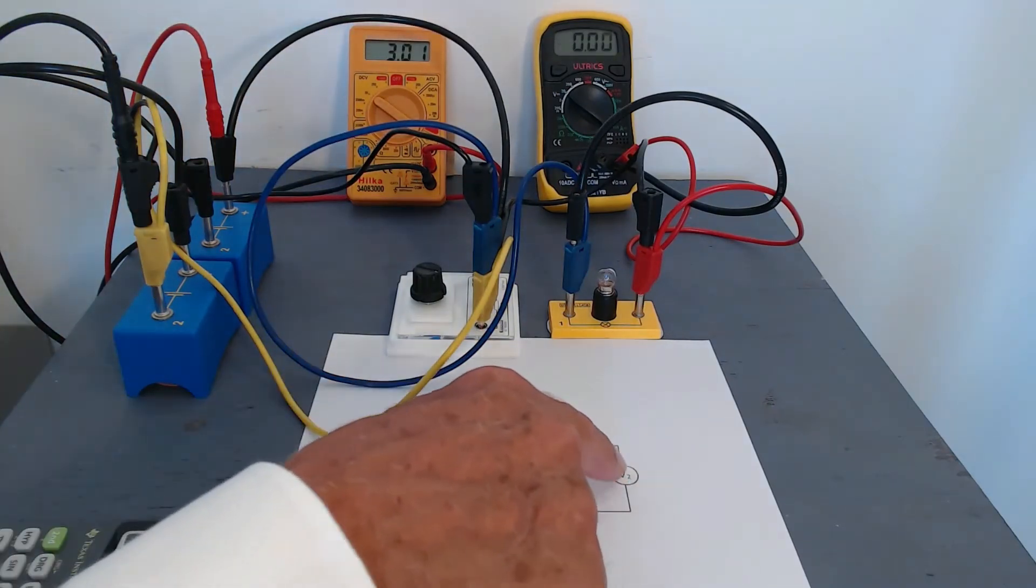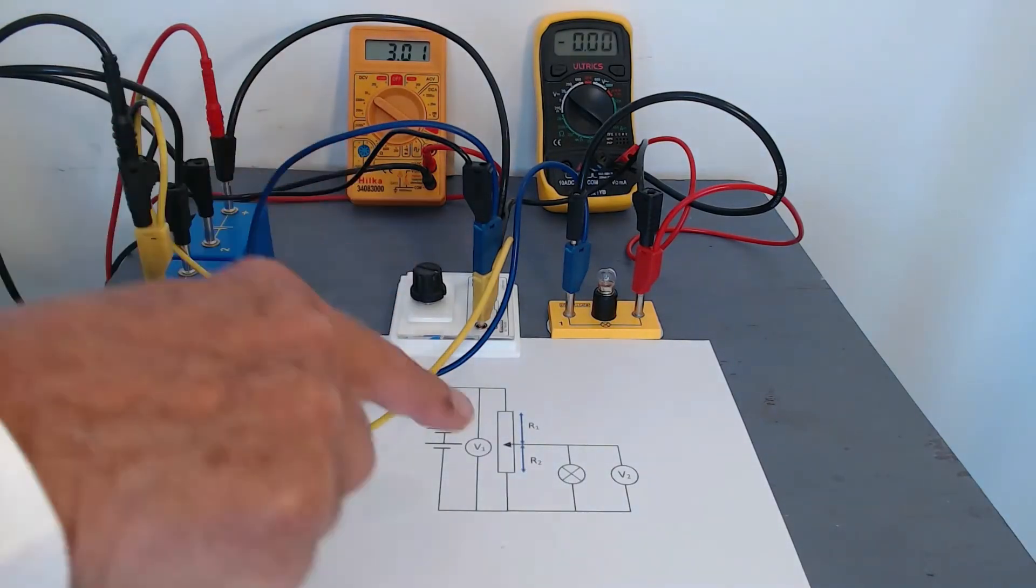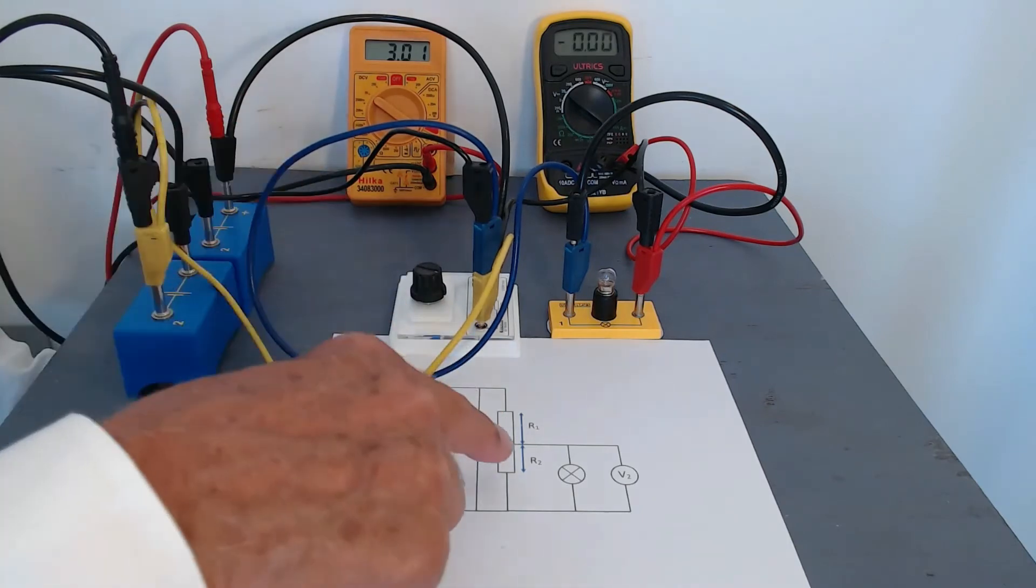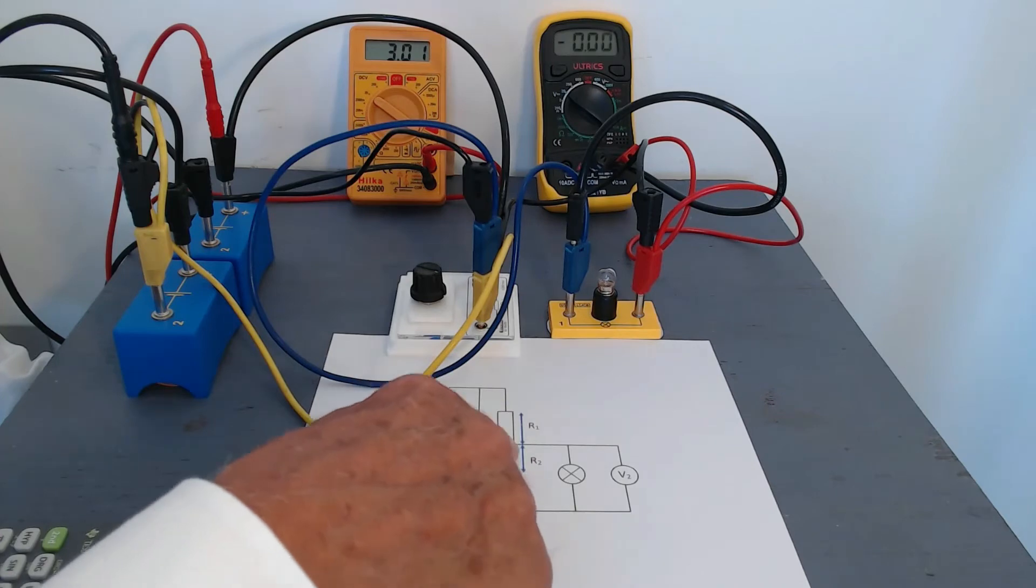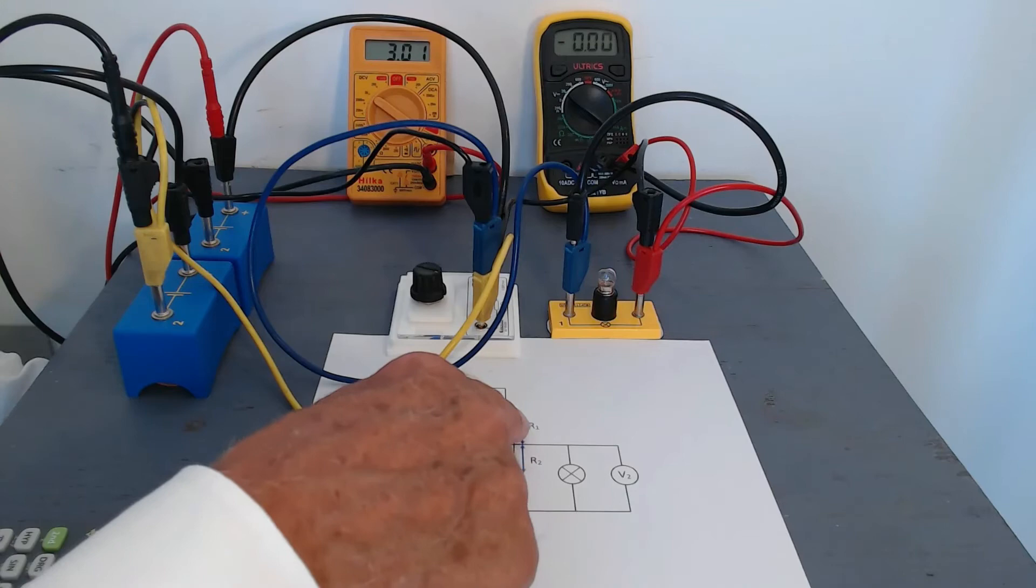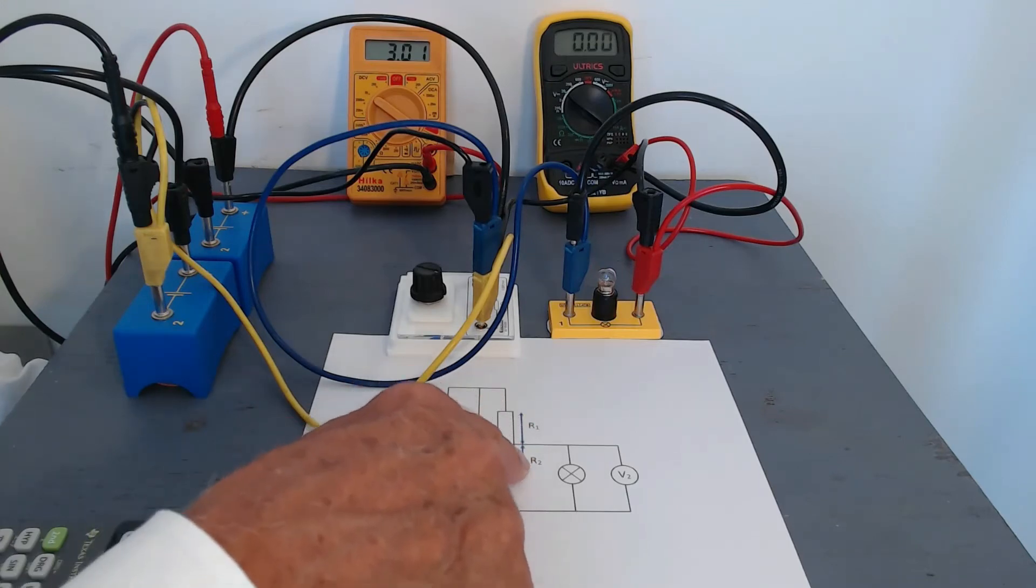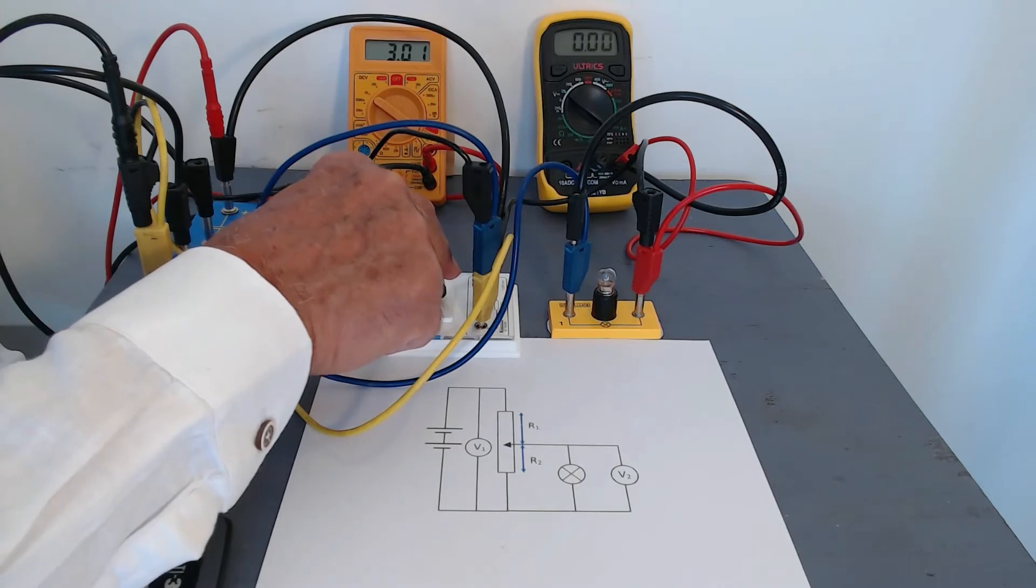So let's see what happens when we move this central point. We're moving it along the resistor and we're therefore changing the values of R1 and R2, although the sum of them is always going to be 1000 ohms. All right, let's move it.